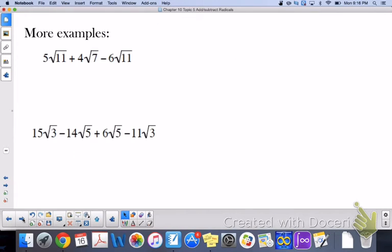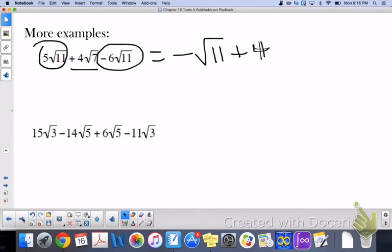Now, when we are combining, sometimes they aren't the same. So you have to find like terms. With 5 root 11, we can combine negative 6 root 11. 5 minus 6 is negative 1 root 11, or just negative root 11, and then we have plus 4 root 7.